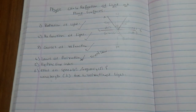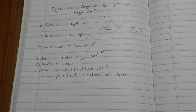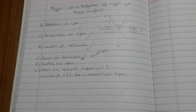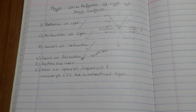Now coming to refractive index — what do you mean by refractive index? The refractive index of the second medium with respect to the first medium is defined as the ratio of the sine of the angle of incidence in the first medium to the sine of the angle of refraction in the second medium. It represents the relationship between the incident ray and the refracted ray.